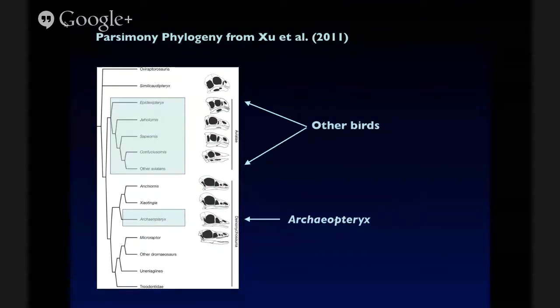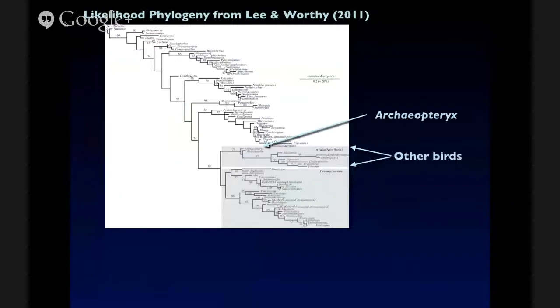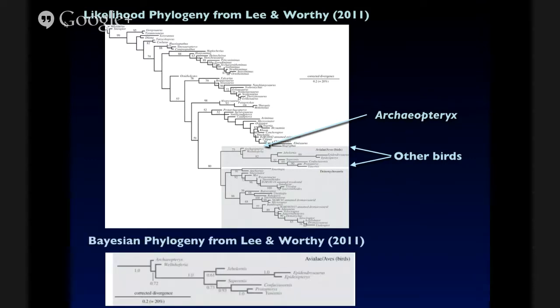And there was a kind of reply paper by Mike Lee and Trevor Worthy published in Biology Letters. And they re-ran the same data set using Raxamel and Mr. Bays and gotten very different results. And so basically, what they're doing is taking the exact same character data, the same ordering strategies, etc., and re-running the analysis. And so here, Archaeopteryx returns to its normal position with other birds in the likelihood tree. And in the Bayesian tree, we see the same result. Archaeopteryx is supported as part of birds. The branch lengths leading to this clade are relatively long. And the Bayesian support value of 1 is particularly quite high.